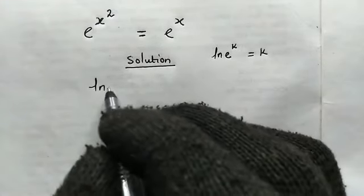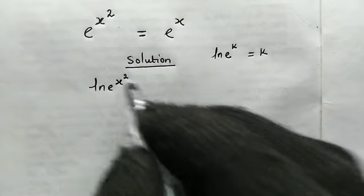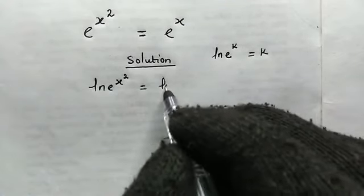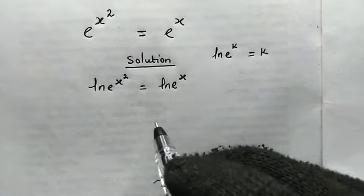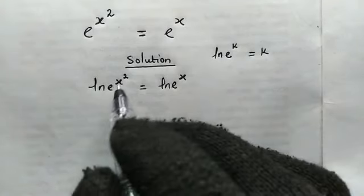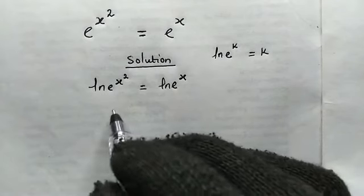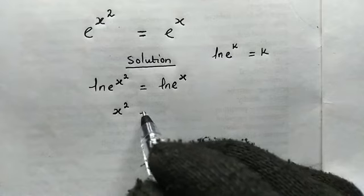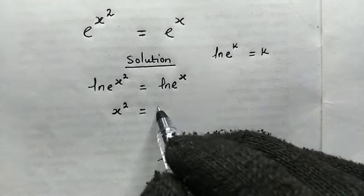So from here we have ln of e to the power of x squared equals ln of e to the power of x. Making use of this property, we have the power of e which is x squared, and this is equal to the power of e here which is x.